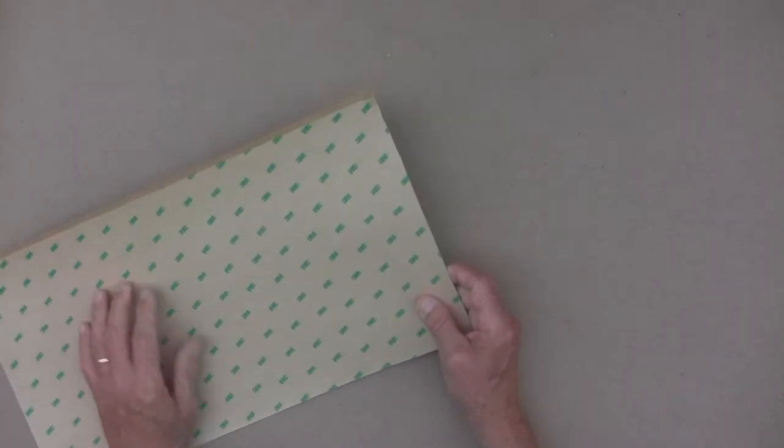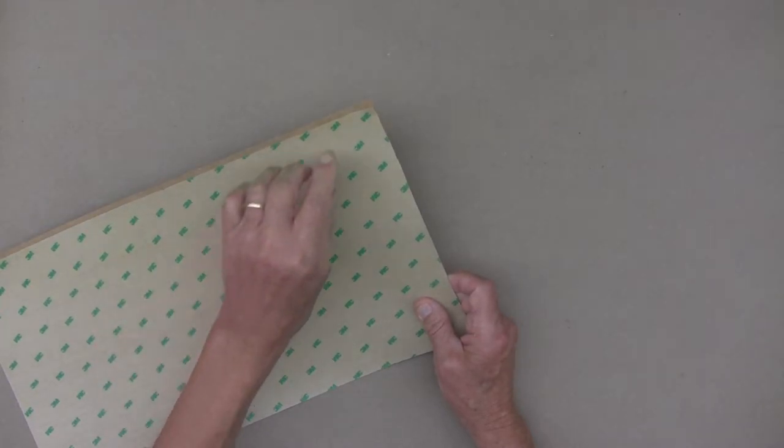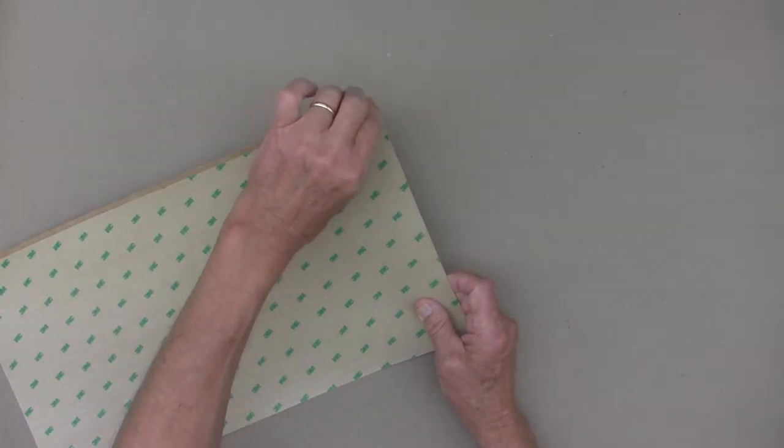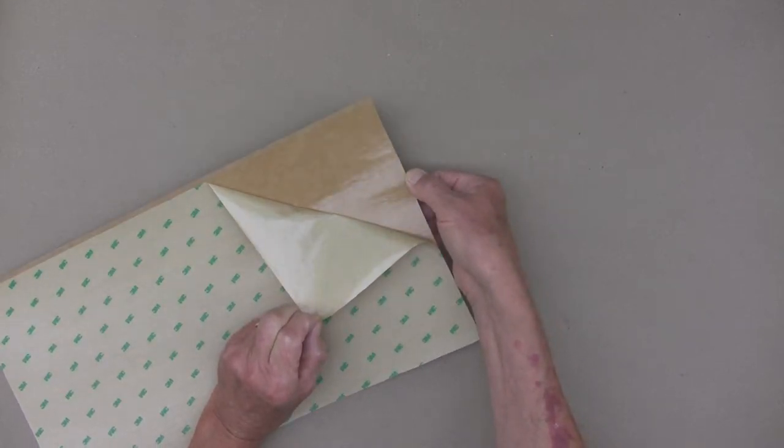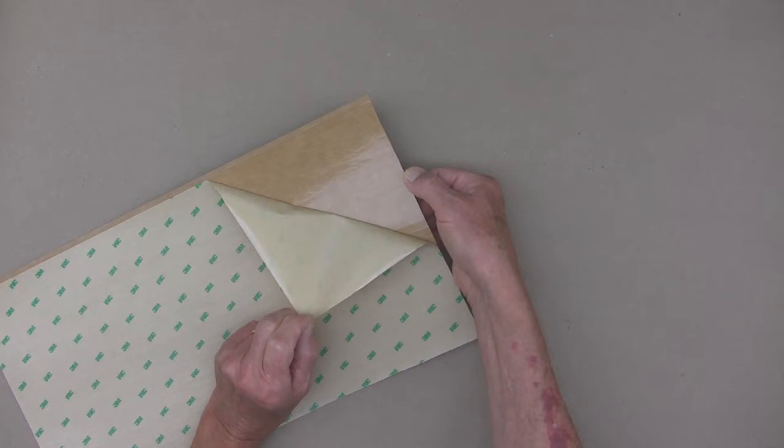Now, each of these veneers can be purchased with a 3M peel and stick adhesive. It's an optional adhesive. You don't have to purchase them with it but it's an option. When you use this 3M peel and stick adhesive you just peel the release paper and you stick the veneer down to any clean painted or varnished surface.